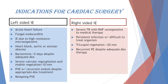High indications for cardiac surgery include acute heart failure, fungal endocarditis, high-grade heart block, bacteremia persisting more than five days despite adequate antibiotic treatment, severe valvular regurgitation, and mobile vegetations greater than 10 mm, as well as emboli despite antibiotic treatment. For right-sided endocarditis, severe tricuspid regurgitation with right heart failure is a main indication, as is recurrent pulmonary embolism, persistent infection, or very large tricuspid vegetations greater than 20 mm.